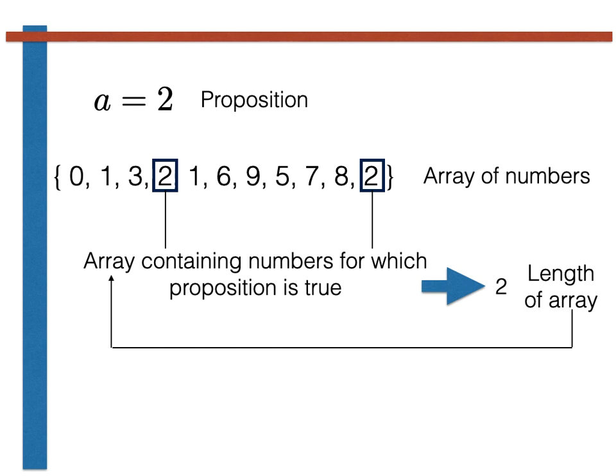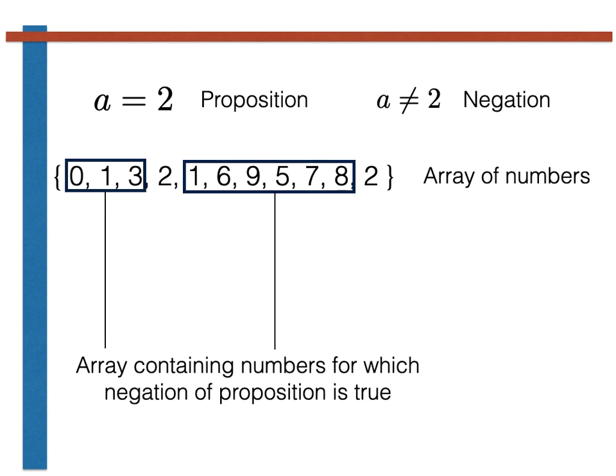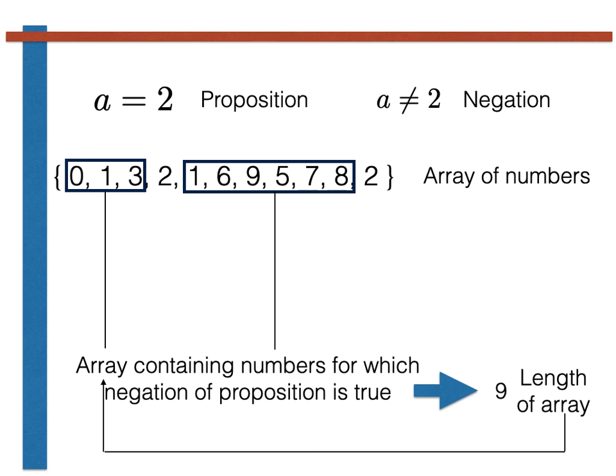In the exercises that follow, you are going to do something similar using the negation of a proposition that you are given. In this case, the negation of a is equal to 2 is a is not equal to 2. You would thus find all the elements in the original array that are not equal to 2 and return 9, which is the number of elements in the original array that are not equal to 2. The point I want to emphasize is that 9 is not the negation.